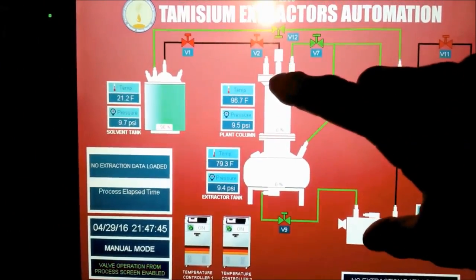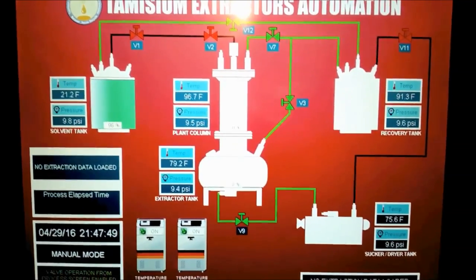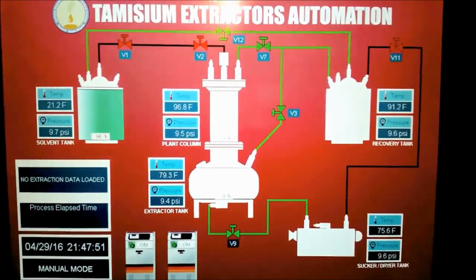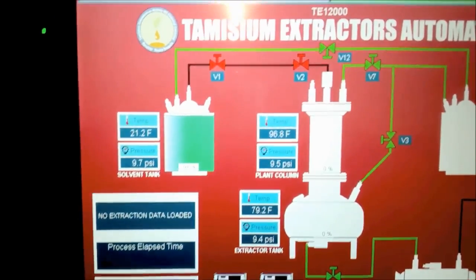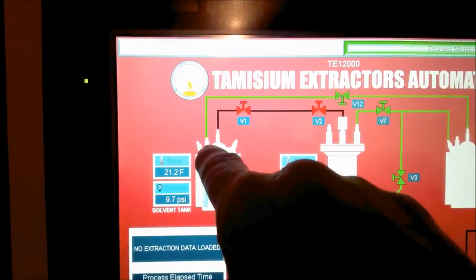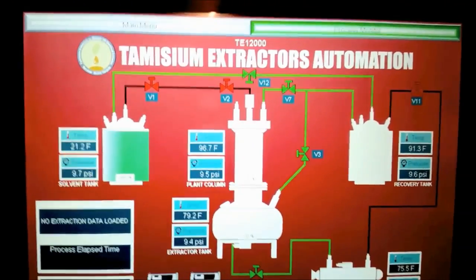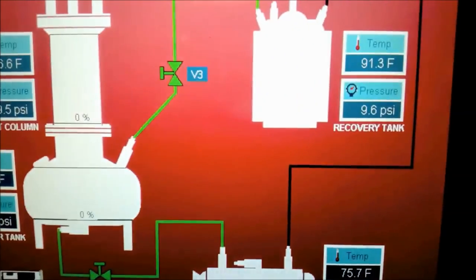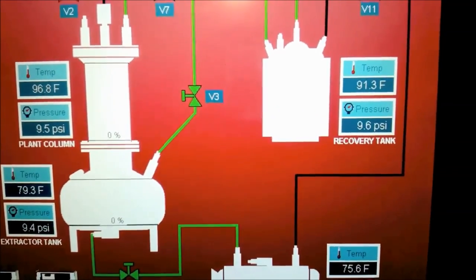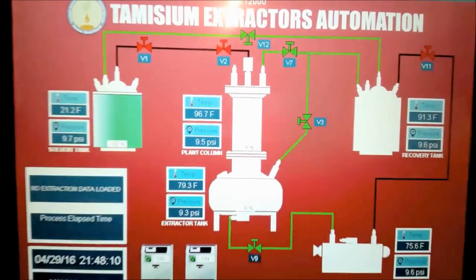Those are the only two tanks that you lose vapor in. But these tanks here you know, we're recovering the vapor from it. So the vapor is traveling back through the green lines back into the vapor input into this tank, through the outlets of all these other three tanks. When those pressures go down to zero or one psi, then we'll consider the process complete. Takes about an hour.